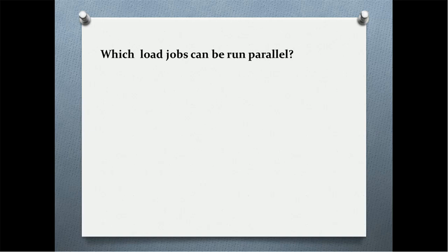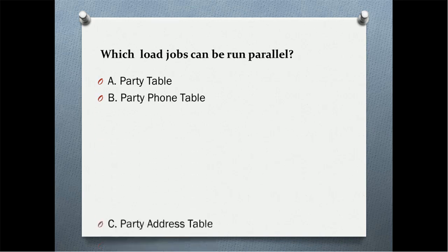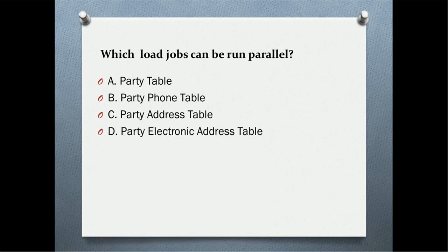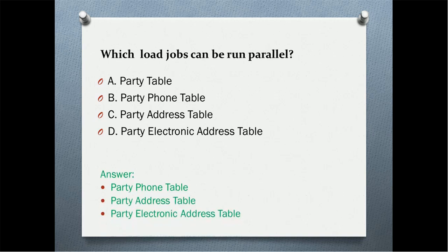Which load jobs can be run in parallel? Assume a party data model. The options are: party table, party phone table, party address table, and party electronic address table. The correct answers are: party phone table, party address table, and party electronic address table. We cannot run the party table in parallel with any other table because party is the parent table — we can run child tables in parallel, but the parent table must run before the child tables.